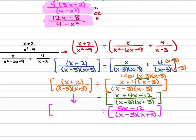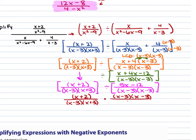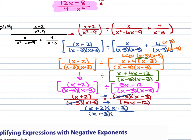Bringing down the first fraction unchanged: (x plus 2) over (x minus 3)(x plus 3). From here we keep, change, flip and multiply. So we have (x plus 2)/[(x minus 3)(x plus 3)] times (x minus 3)(x minus 3)/(5x minus 12). Cancel the (x minus 3) diagonally, then multiply straight across: (x plus 2)(x minus 3) all over (x plus 3)(5x minus 12).